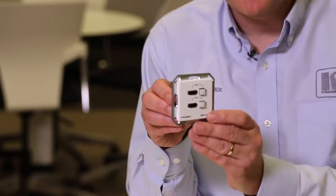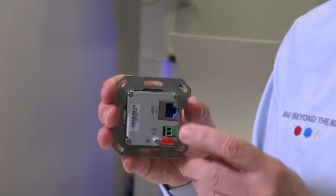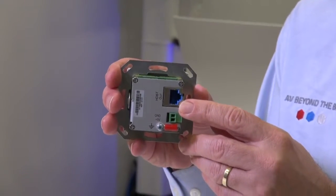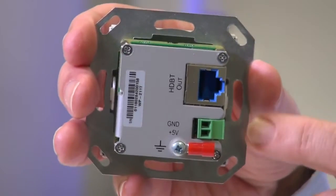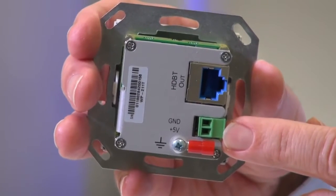On the back of the unit, we can see the HDBase-T output, which can also provide PoE to the unit, and if PoE is not available, a 5V DC input.